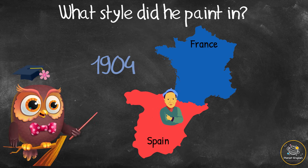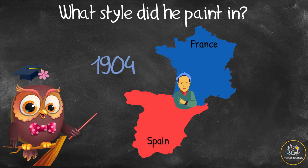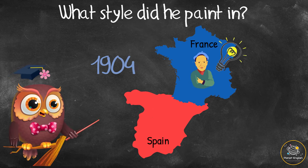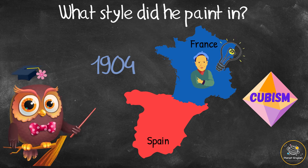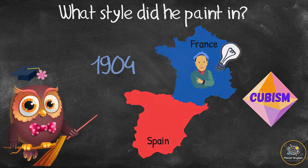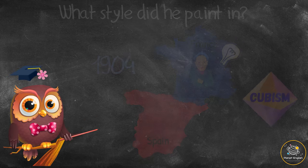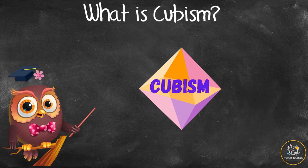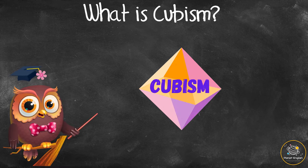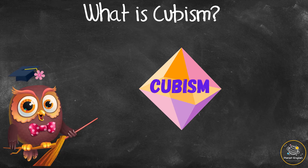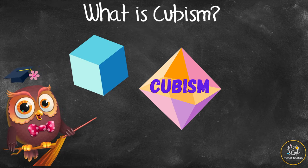This was called his Blue Period, and these paintings represented sadness and loss. In 1904, at the age of 23, he moved to Paris where he invented Cubism, which is the style for which he is most famous.